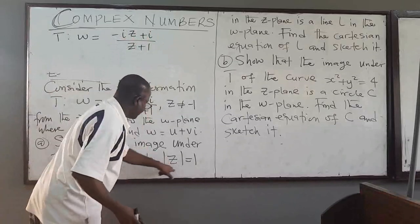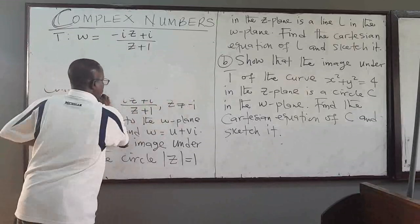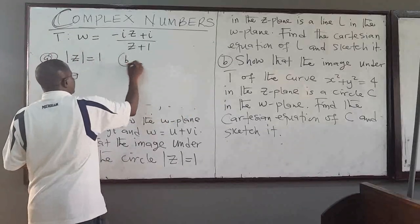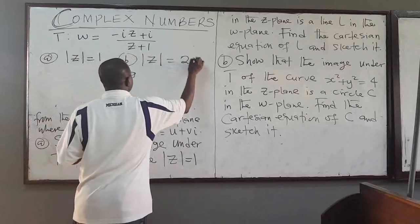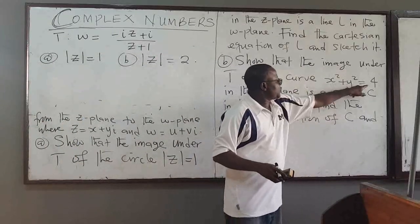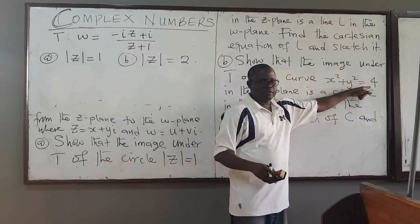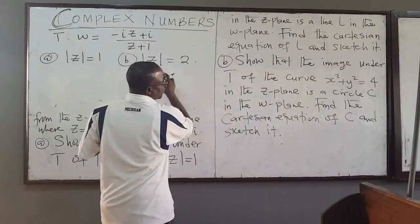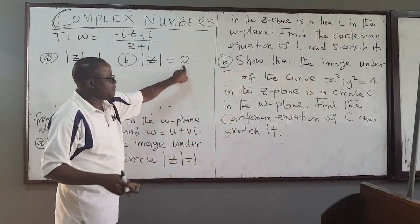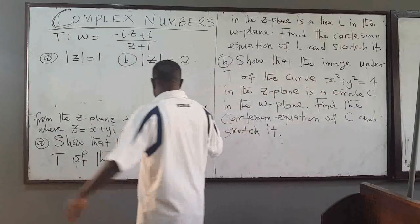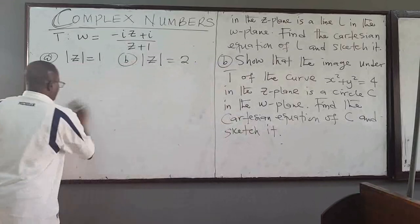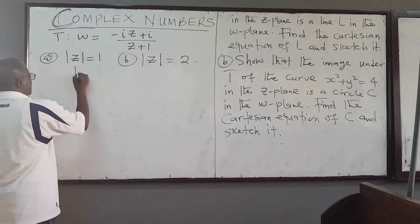In part A, we have the absolute value of Z equal to 1. In part B, we need the absolute value of Z equal to 2. In B, x² + y² = 4 is a circle of radius 2, center 0, radius 2. You have to know that you can represent this in complex form. So we want to show that the unit circle transforms under W to a line, and the other circle will transform into a circle C.